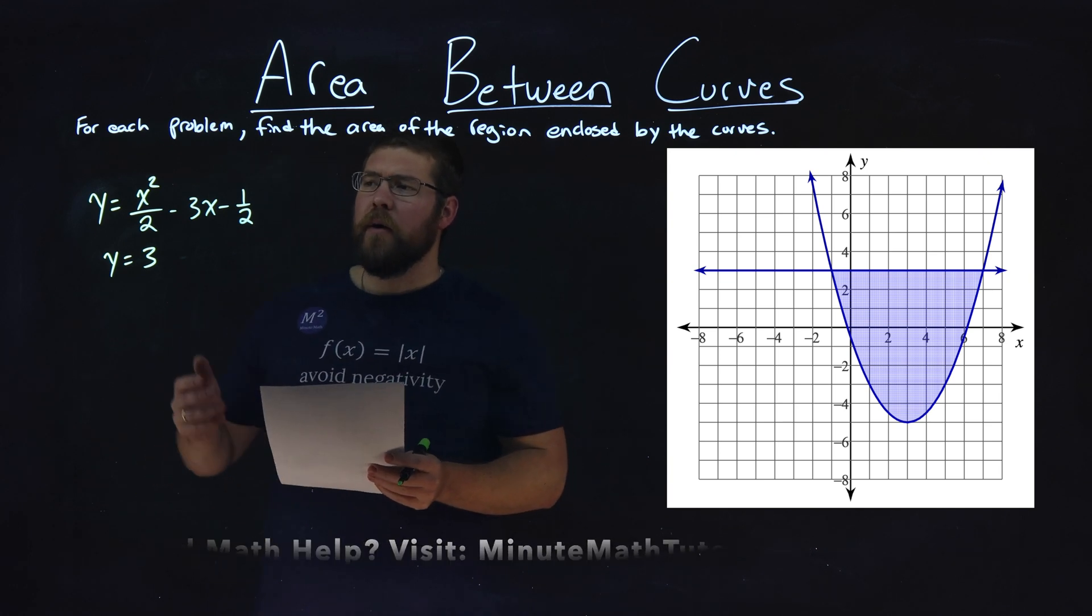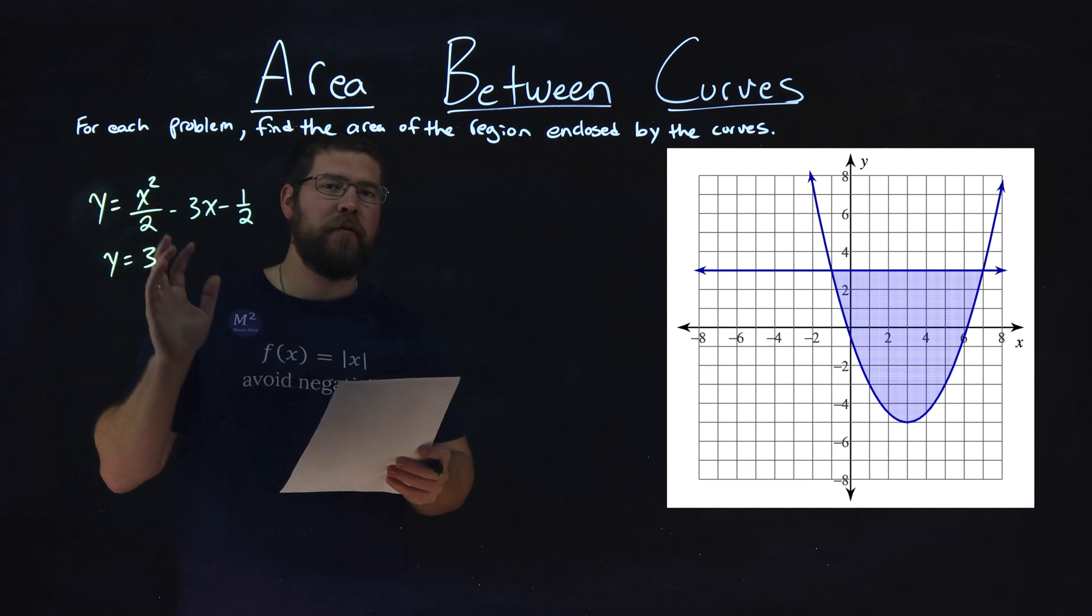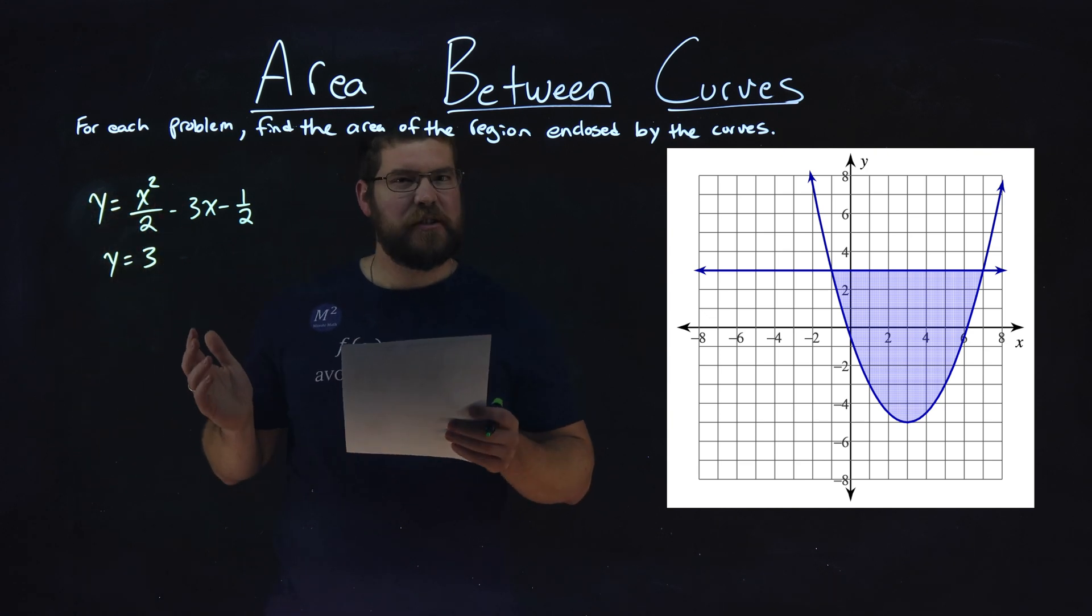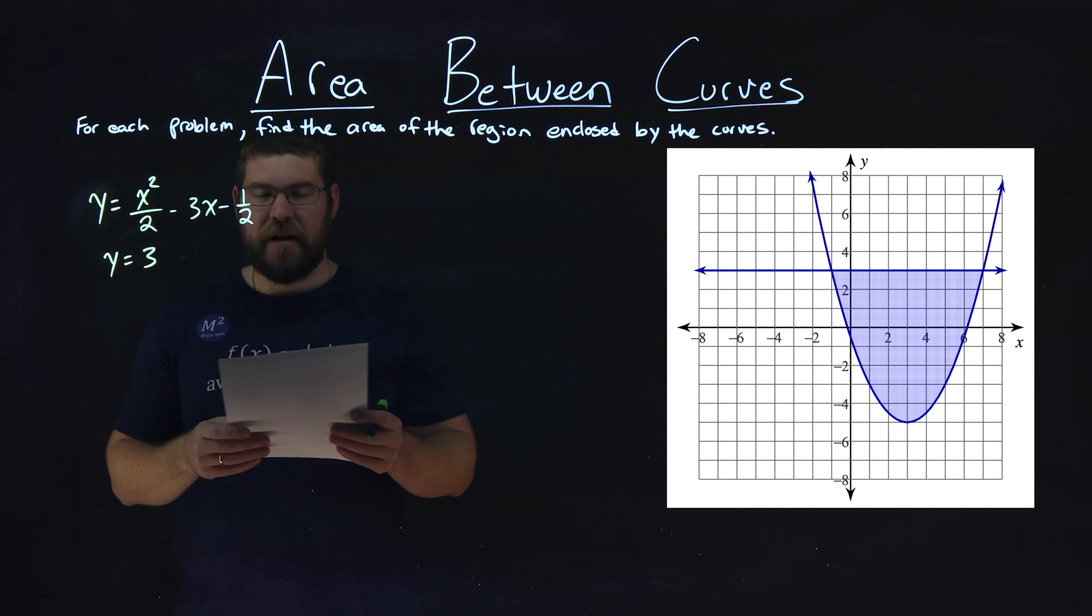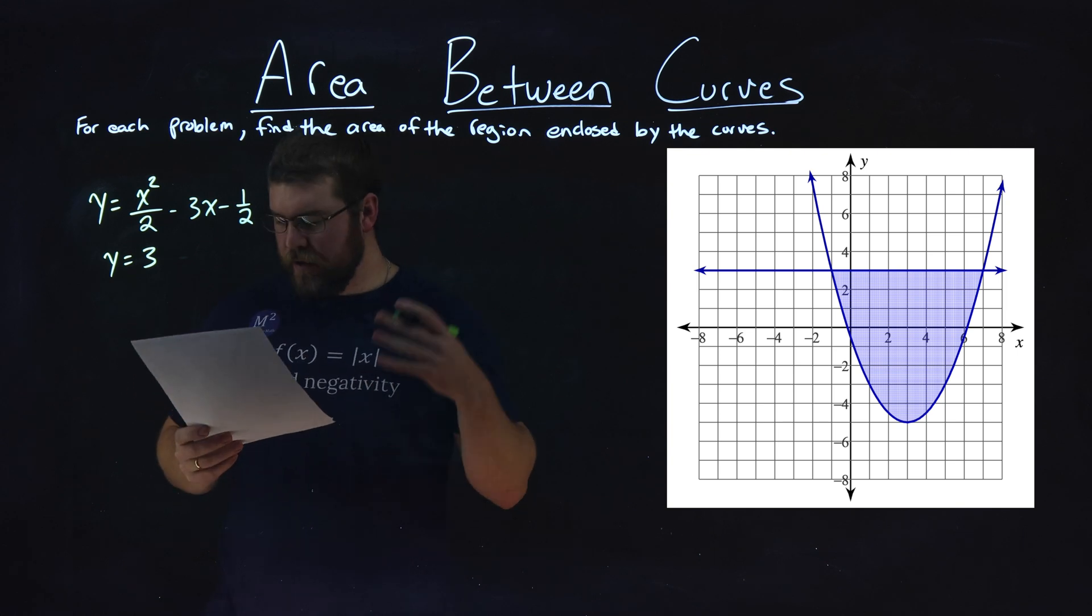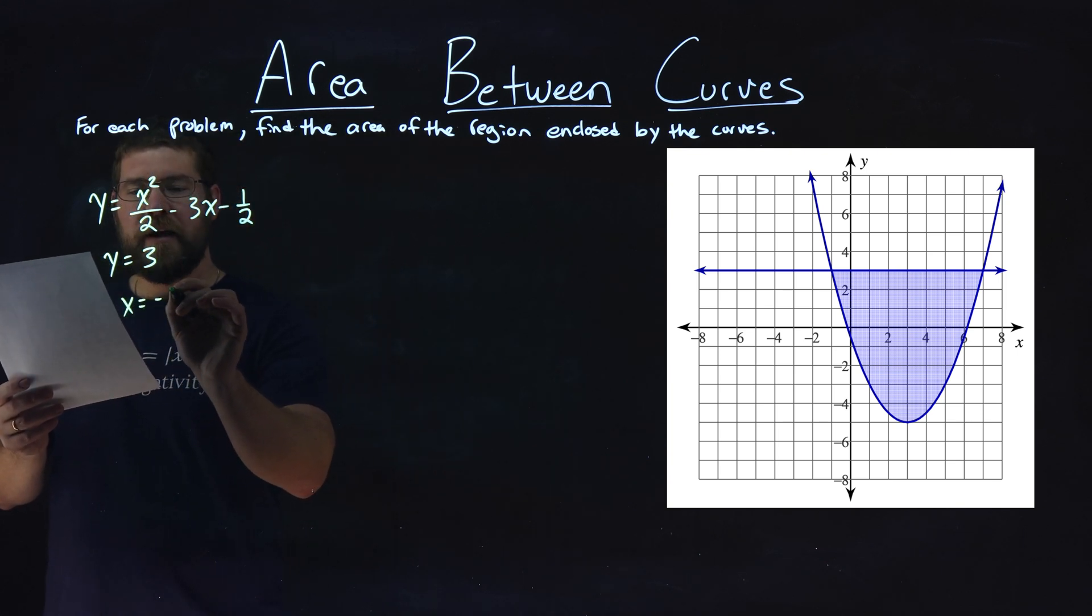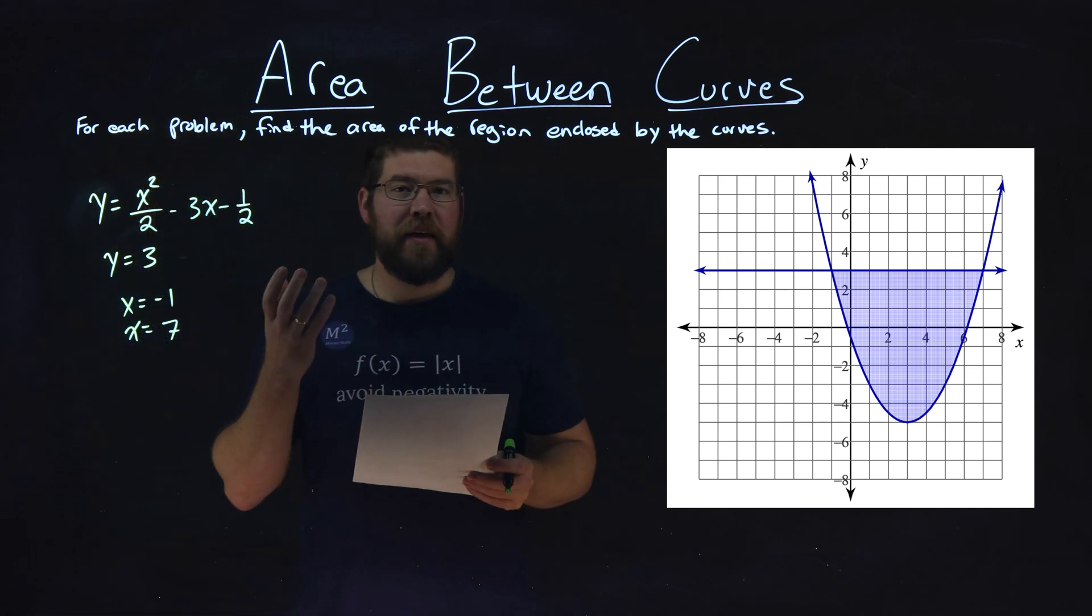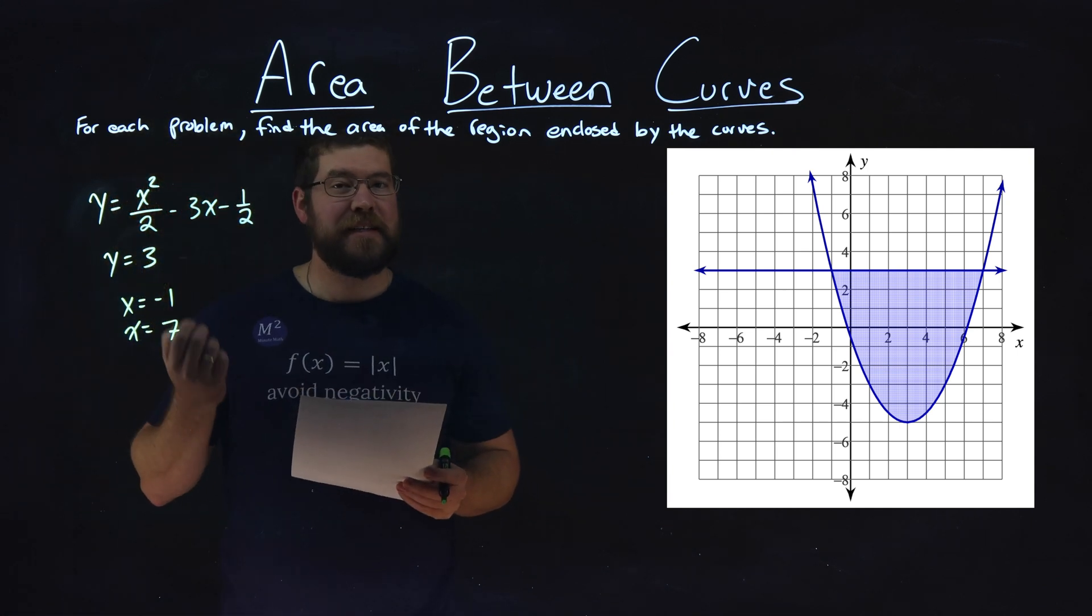Well, one thing we have between the two equations here, we need to find the endpoints where they intersect. We can clearly see that with the graph, and we can check it algebraically, but with our graph, we have x equals negative 1 and x equals positive 7. These are the x values where these two equations intersect.